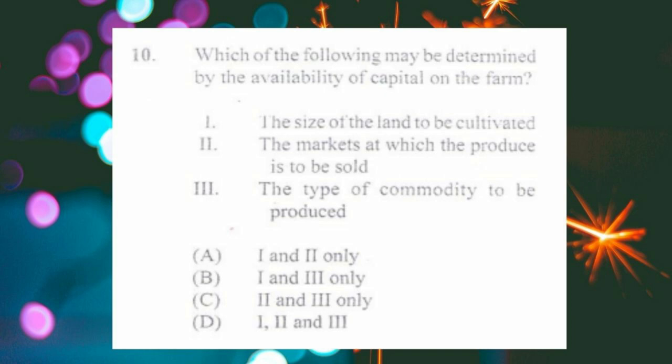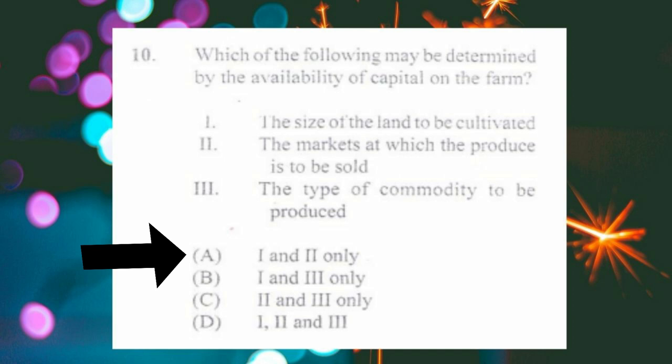Question number ten: which of the following may be determined by the availability of capital on the farm? One) the size of the land to be cultivated, two) the markets at which the produce is to be sold, three) type of commodity to be produced. The answer is a) one and two only. Capital on the farm includes machines and equipment; more machines mean larger land cultivated and larger markets supplied.